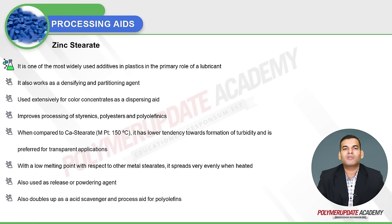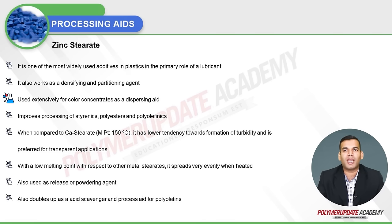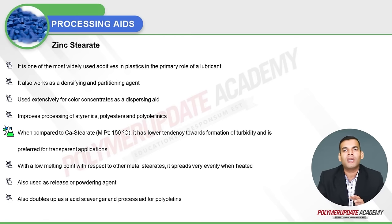Zinc stearate is one of the most widely used additives in plastics in the primary role of a lubricant. It also works as a densifying and partitioning agent and is used extensively for color concentrates as a dispersing aid. It improves the processing of styrenics, polyesters, and polyolefins. When compared to calcium stearate, which also works as a lubricant, calcium stearate has a melting point of 150°C, a lower tendency towards turbidity formation, and is preferred for transparent applications.